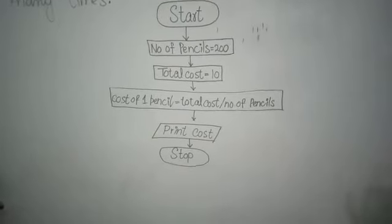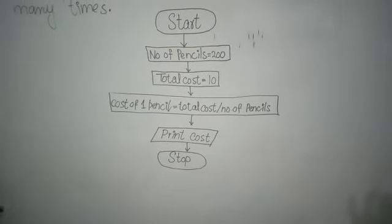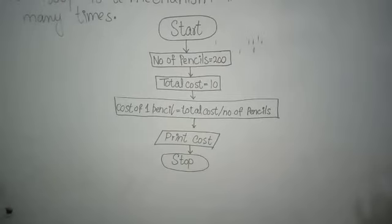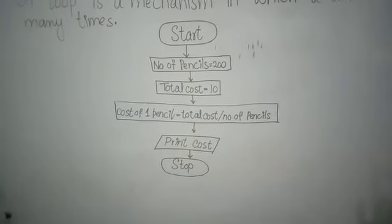After that, what is your fourth step? Cost of one pencil is equal to total cost divided by number of pencils. That means that we divide the total cost by number of pencils, then we will have one pencil's cost.